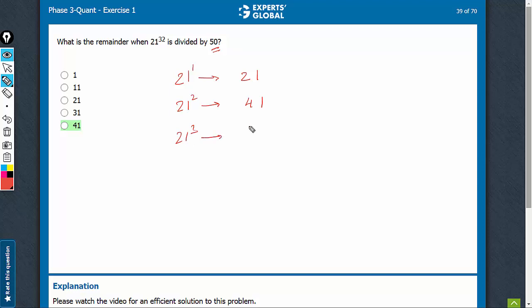21 raised to power 3. It's 861. So, the last two digits are 61.